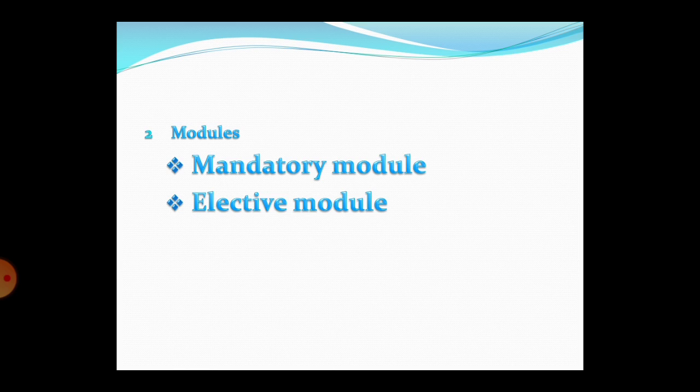The second type is the elective module, which offers choices and options. For example, a candidate has to complete one module by the end of the fourth semester, and there are three modules available — human values, diabetic care, or soft skills. Any one of these modules has to be completed by the student before the end of the fourth semester.